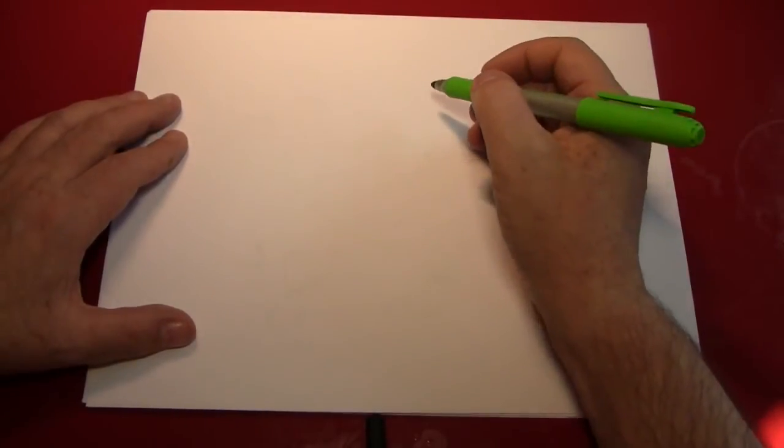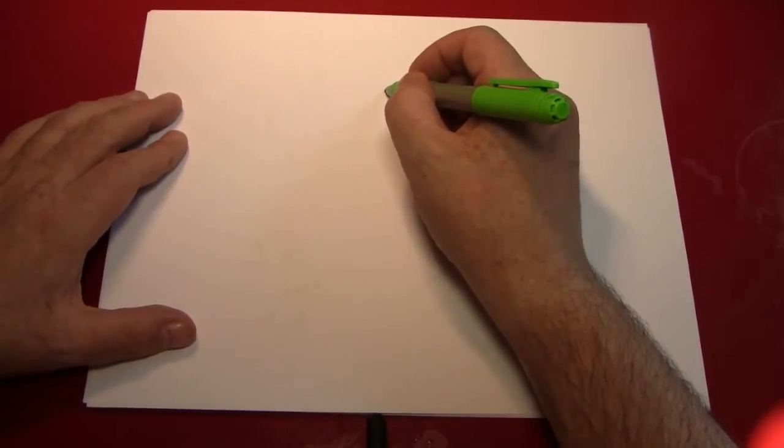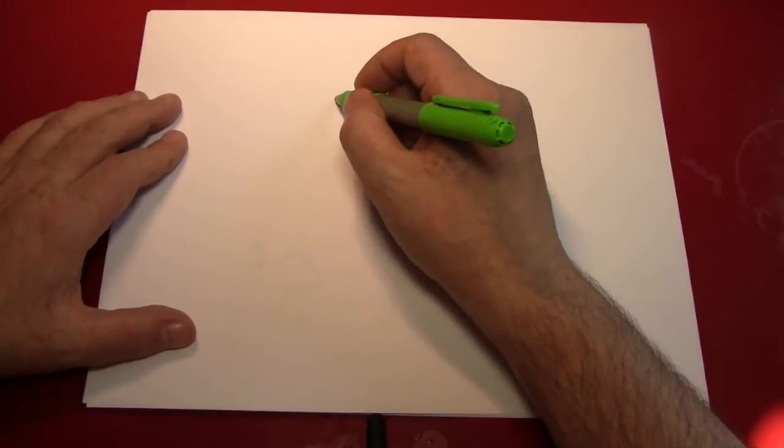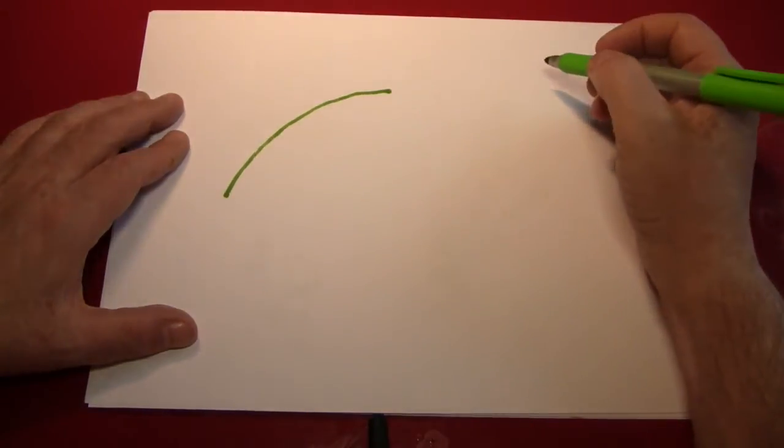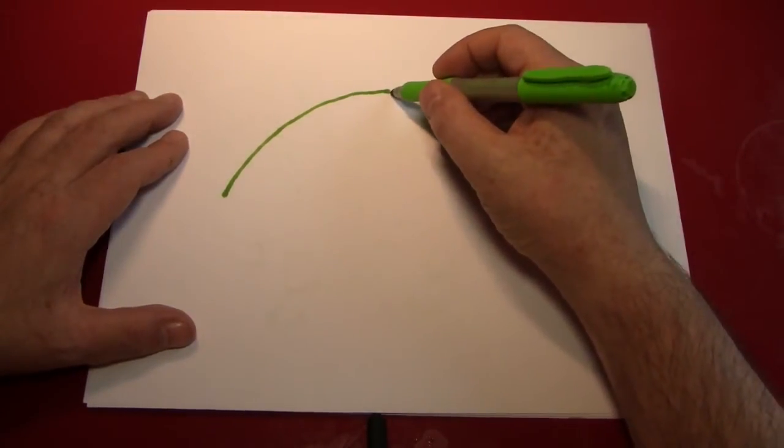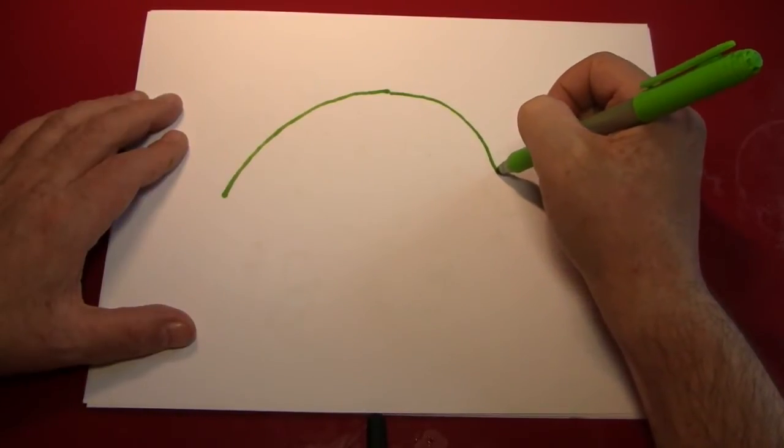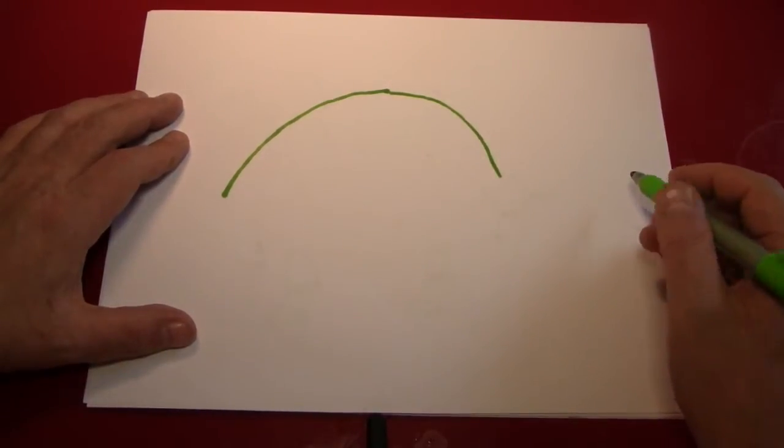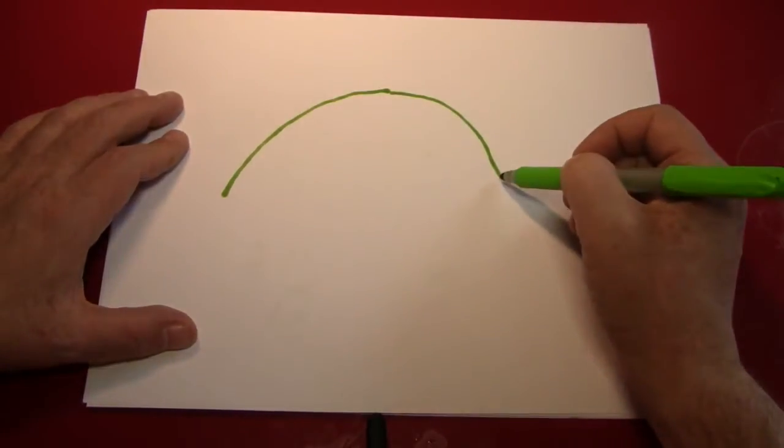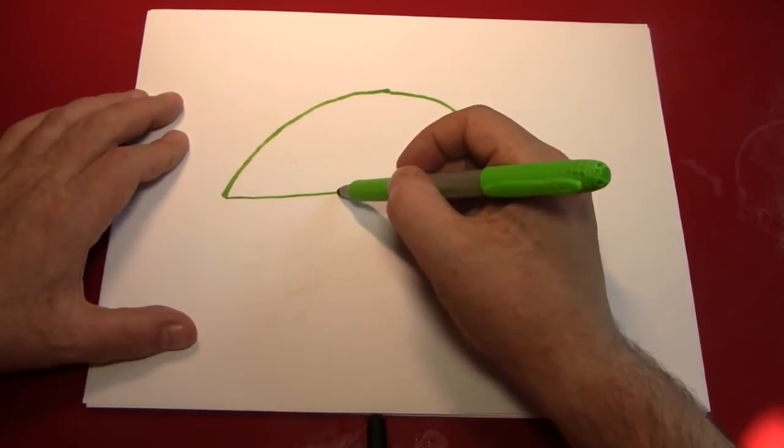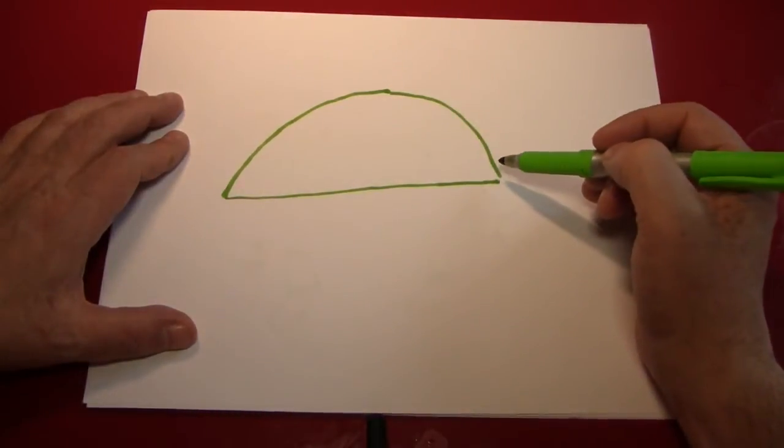Well, tortoises have large round shells, so let's start at the top here and give it a large round shell. Here we are making a curved line down to the left, and then doing the same thing down to the right. Well, that wasn't so hard, even I didn't mess it up too badly. We can connect these two points with a sort of smooth line, and don't worry too much about whether it's straight or not. Here's the top of our tortoise's shell.